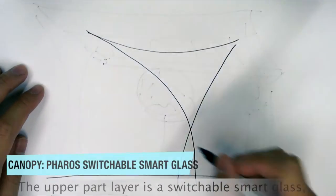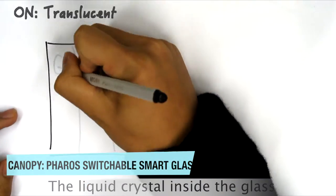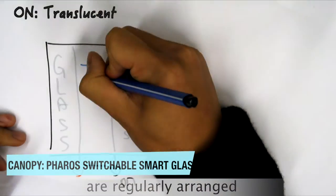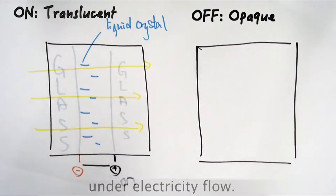The upper part layer is a switchable smart glass. On the other side is the solar cell panel. The liquid crystals inside the glass are regularly arranged and let the light pass through the glass under electricity flow.